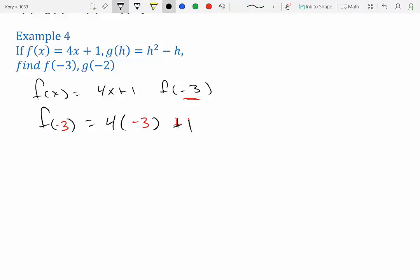So now we'll just work it out. Forget about the left side. We have 4 times -3 is -12 + 1. We get -11. So f(-3) = -11.